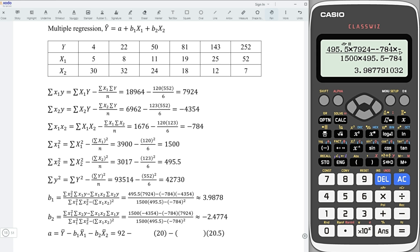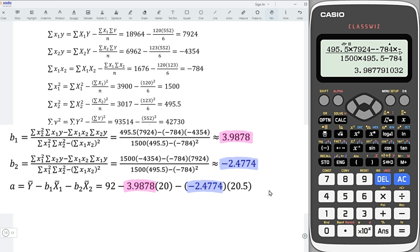Repeat the same step, and we should obtain the coefficient of the second factor. Let's substitute the values, and we should be able to obtain the constant, and hence form the regression line.